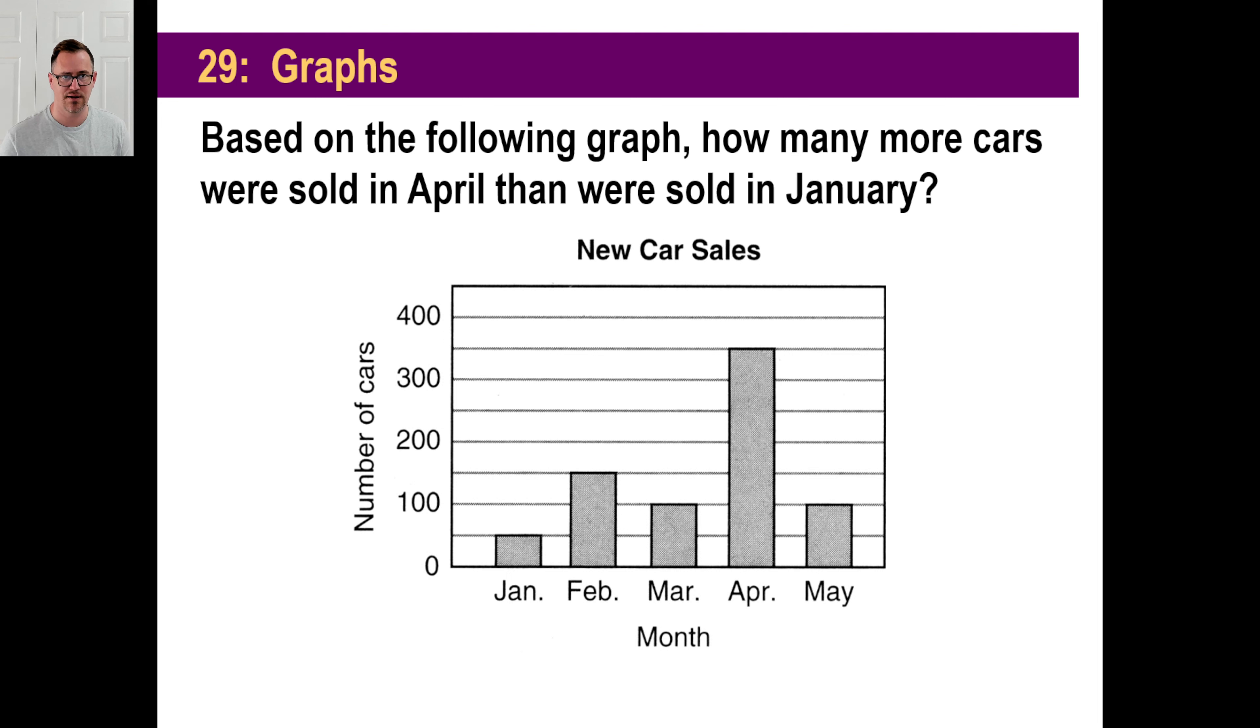Let's read this thing. Based on the following graph, how many more cars were sold in April than were sold in January? We need to be able to read the graph. How many were sold in April? 350, it looks like. So how many were sold in January? Just 50. So 350 minus 50 is 300, our answer for this one.